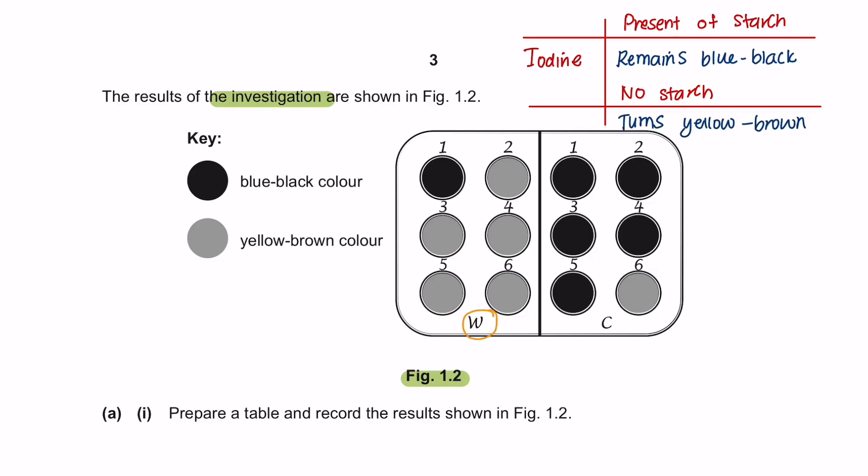W here is the result of the test being done in warm water. And C here is the result for the investigation being done in cold water. As you can see in warm water, it only takes the second dimple to show a yellow-brown color,